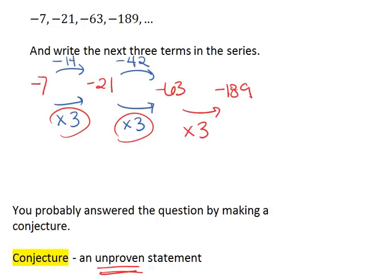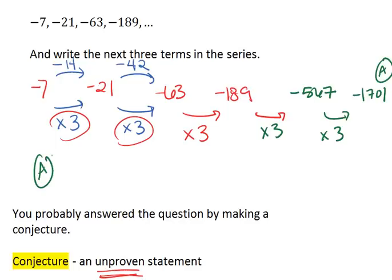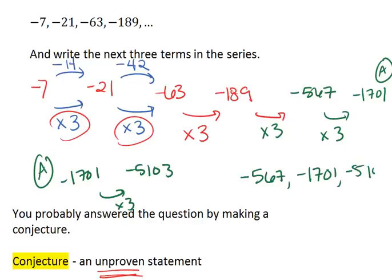Okay. As for the next three terms, if we multiply by 3 again, we get negative 567. And then if we multiply by 3 again, we get negative 1,701. And then if we multiply by 3 again from negative 1,701, we get negative 5,103. So our next three terms are negative 567, negative 1,701, and negative 5,103.